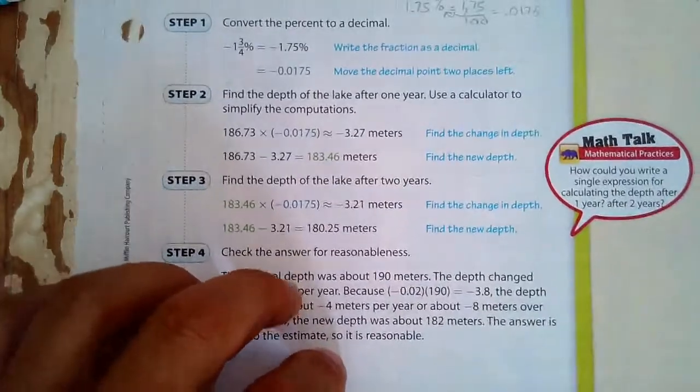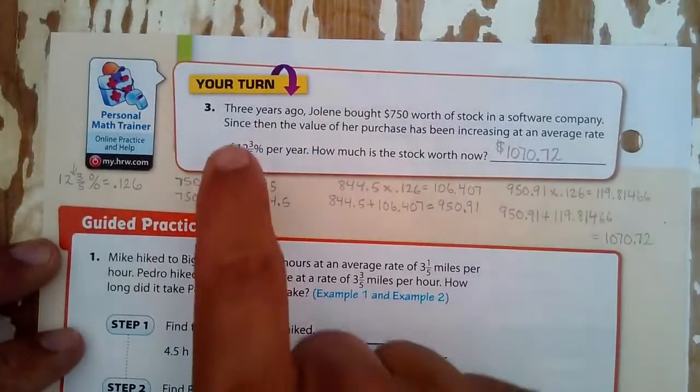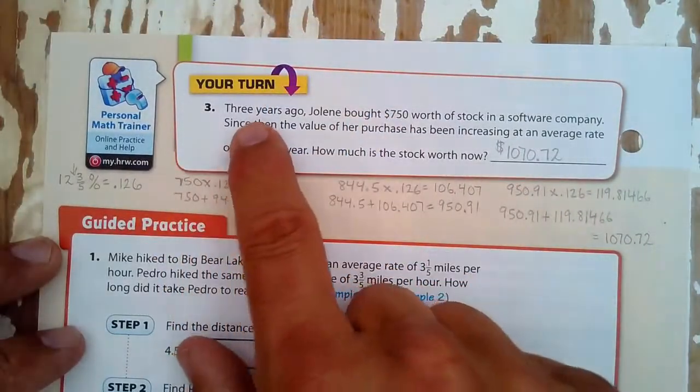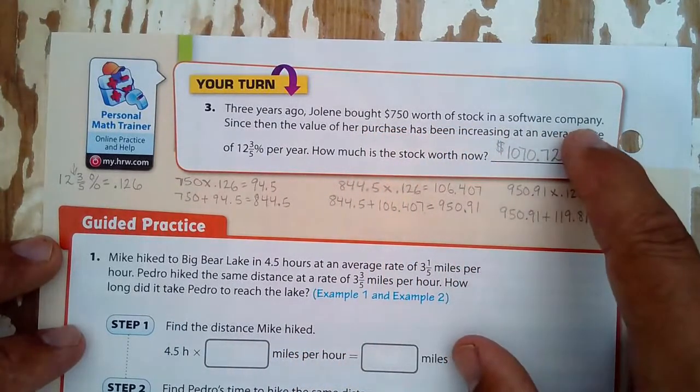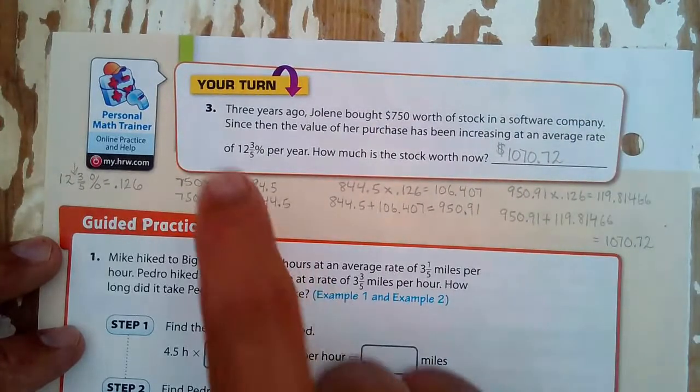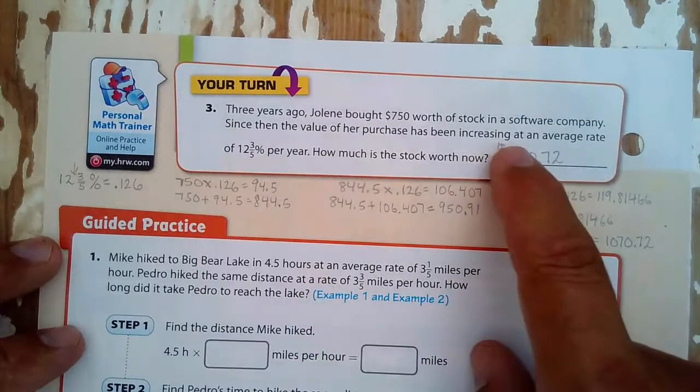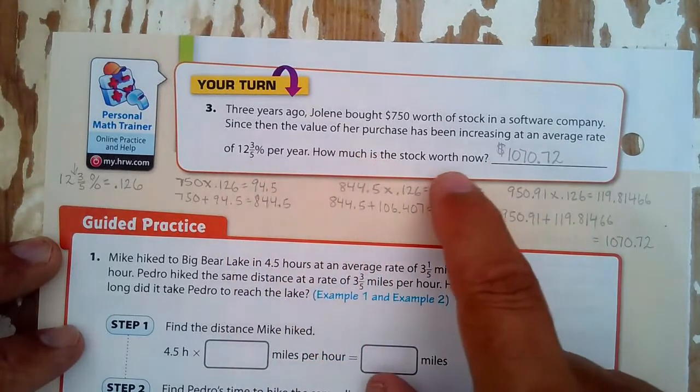So what we have is this problem here. Three years ago, Jolene bought $750 worth of stock in a software company. That's partial ownership of a company. Since then, the value of her purchase has been increasing at an average rate of 12 and 3/5 percent per year. How much is the stock worth now?